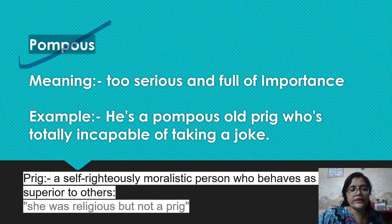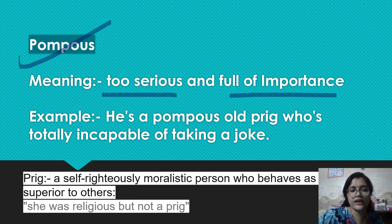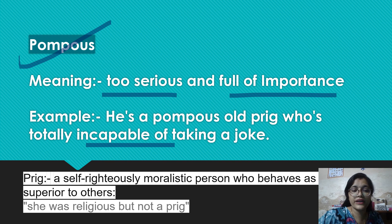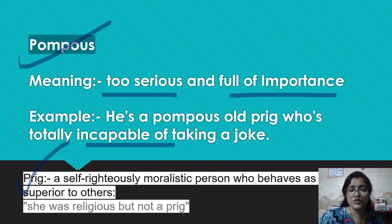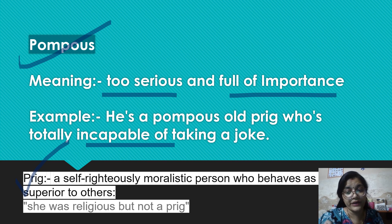Okay, next word is pompous. So guys, pompous ka matlab hota hai: too serious and full of importance. Example: He is a pompous old prig who is totally incapable of taking a joke. Yahaan par prig ka matlab kya hai — so guys, prig is a self-righteously moralistic person jo is tarha se behave karte hain that they are superior to others. Example: She was religious, but not a prig.